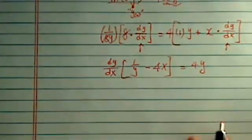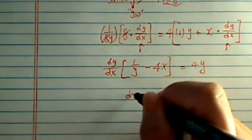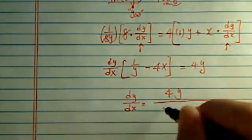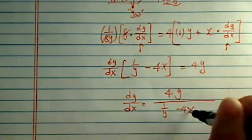And once we get over here, really all we have to do is say dy dx is what I'm looking for, is equal to 4y divided by 1 over y minus 4x.